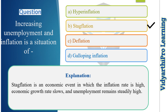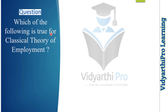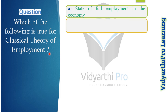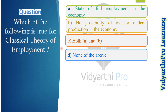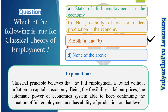Our next question: which of the following is true for the classical theory of employment? Options: state of full employment in the economy, no possibility of over or under production, both A and B, or none of the above. The correct answer is option C, both A and B, because classical principle believes that full employment is found without inflation, and in a capitalist economy with flexibility in labor prices, the automatic power of the economic system is able to maintain a situation of full employment.